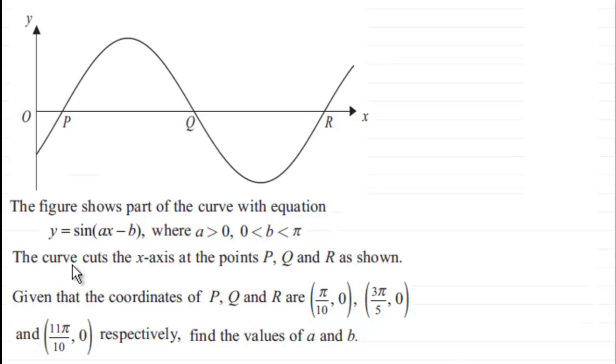And we're told that the curve cuts the x-axis at the points P, Q and R. We're given that the coordinates of P, Q and R are π over 10, 0, three π over 5, 0 and eleven π over 10, 0 respectively. And what we've got to do is find the values of those constants a and b.